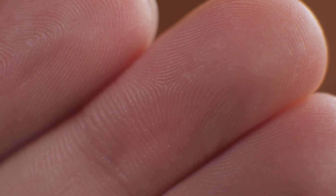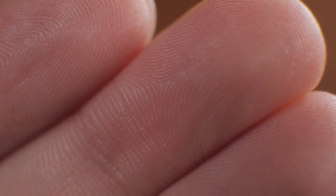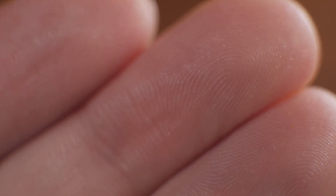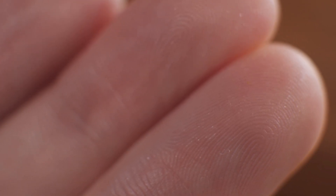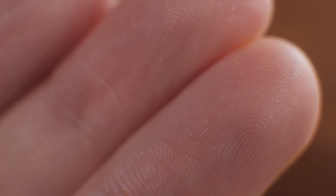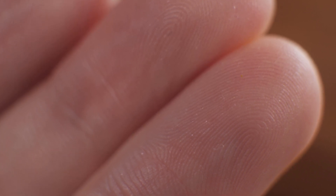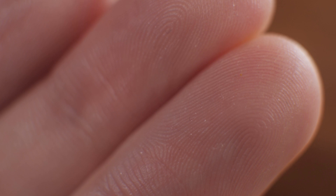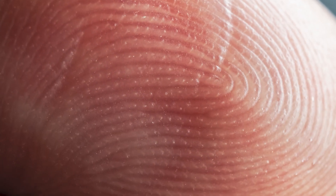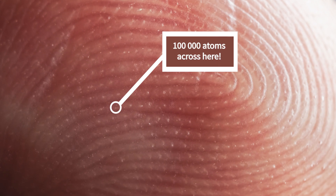So, take a look at the tip of your finger — it's probably about one centimetre or ten millimetres across. You might just be able to make out the tiny ridges that make up your fingerprint; each one is one hundred micrometres wide. Now realise that we could line up one hundred thousand atoms across that single ridge — and that gives you the scale of the atom.